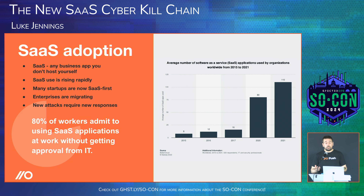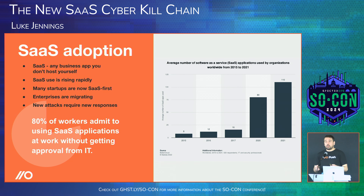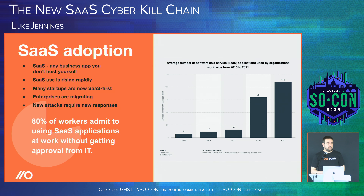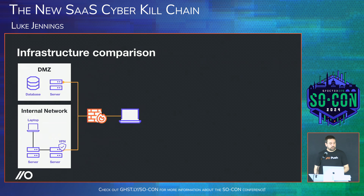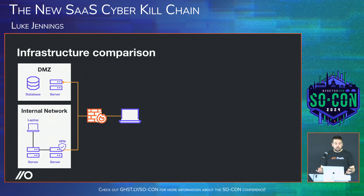From a SaaS adoption perspective, the graphs I have are a couple of years out of date but we saw a massive shift. Most startups now are SaaS-first or SaaS-native. At Push Security we've been completely SaaS-native for years — no infrastructure, fully remote, no offices. Even with larger enterprise customers who haven't officially shifted, when you actually look at visibility you find far more self-adopted shadow SaaS than they realize — employees and teams have signed up for things on their own. There's actually a huge attack surface there.